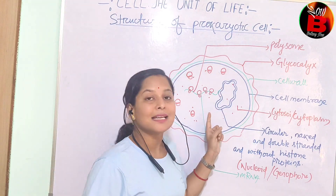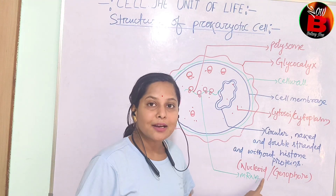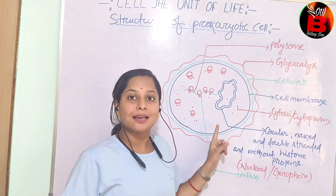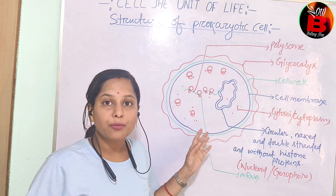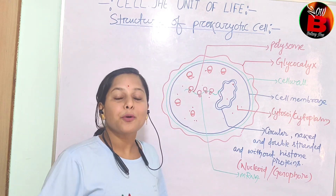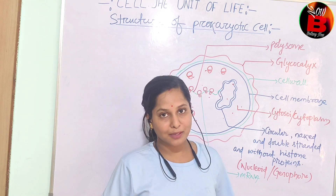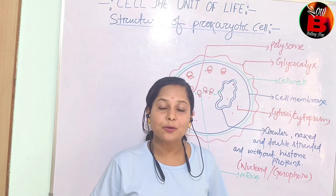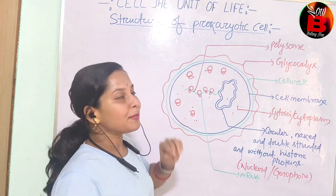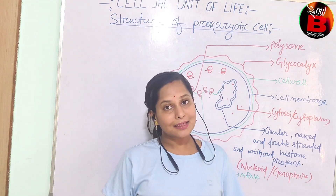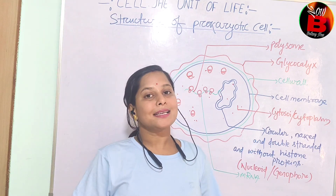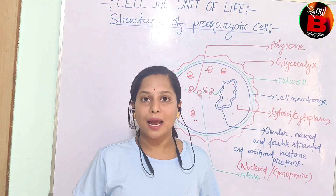The place where the genetic material is placed is known as the nucleoid or genophore. From the genetic material, that is DNA, RNA is formed by the process of transcription. And for protein synthesis, translation takes place. For protein synthesis, there is the requirement of another cell organelle known as the ribosome, which is scattered freely in the cytoplasm. The ribosome is 70S type in case of a bacterial or prokaryotic cell.